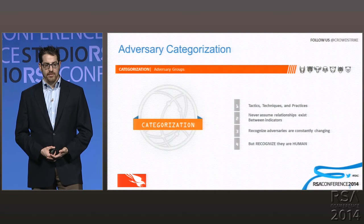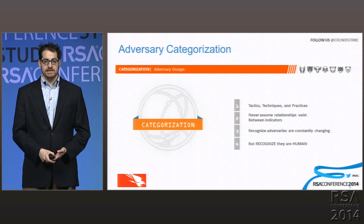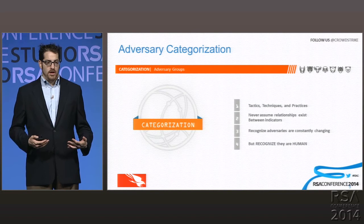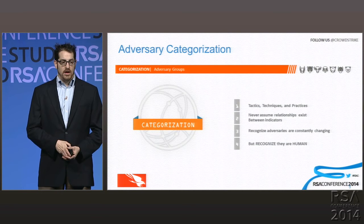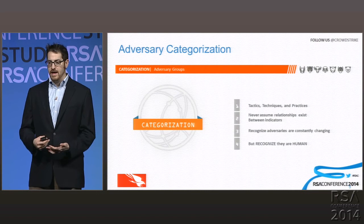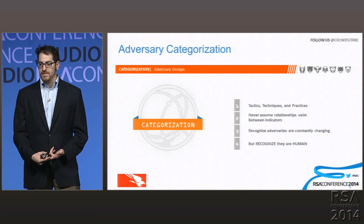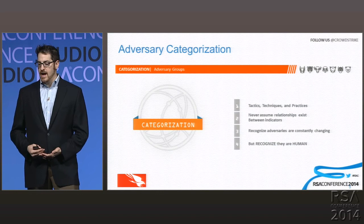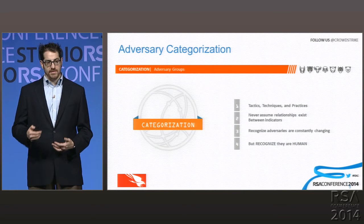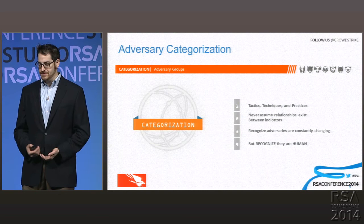One of the things we focus on with an intelligence-driven security approach is adversary categorization. If you understand the tactics and techniques of the adversary, how they operate, and what they need to be successful — and those things are repeatable. Attackers, like sysadmins, are inherently lazy; they script things to make their job easier. Because of this, they reuse passwords, mutex names, and have a favorite registry key. These TTPs — tactics, techniques, and procedures — they might change aspects of them, but there's something they'll inherently leave behind. That's where we start to get into categorization.